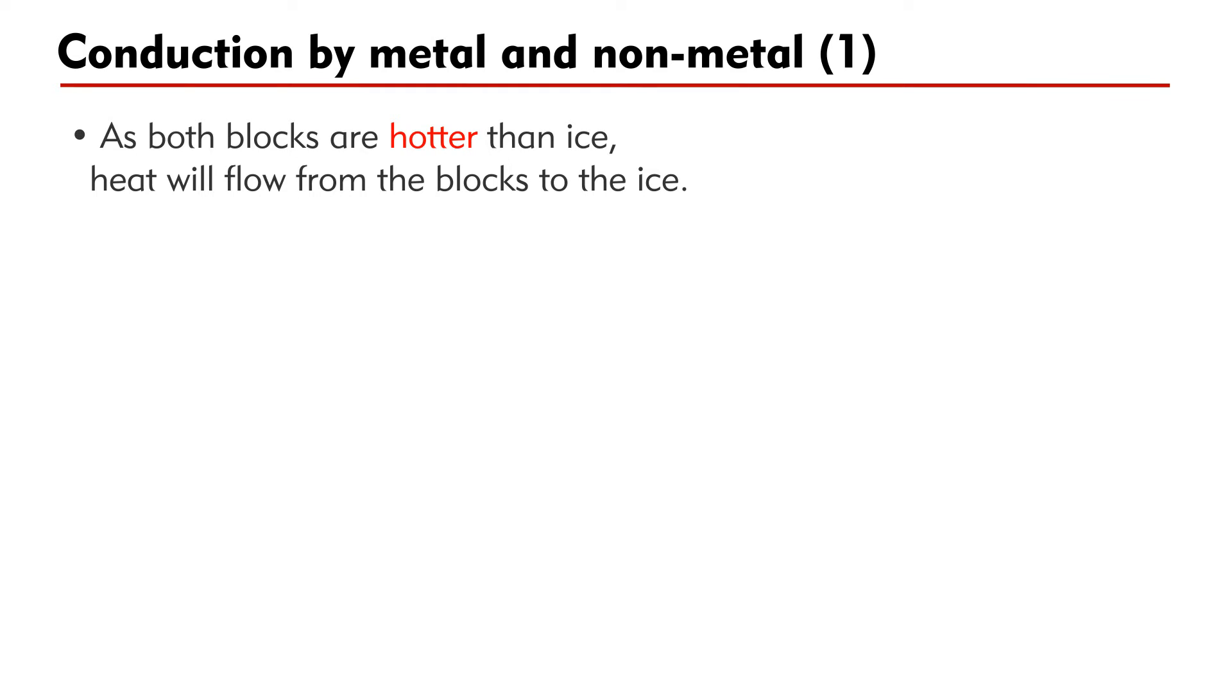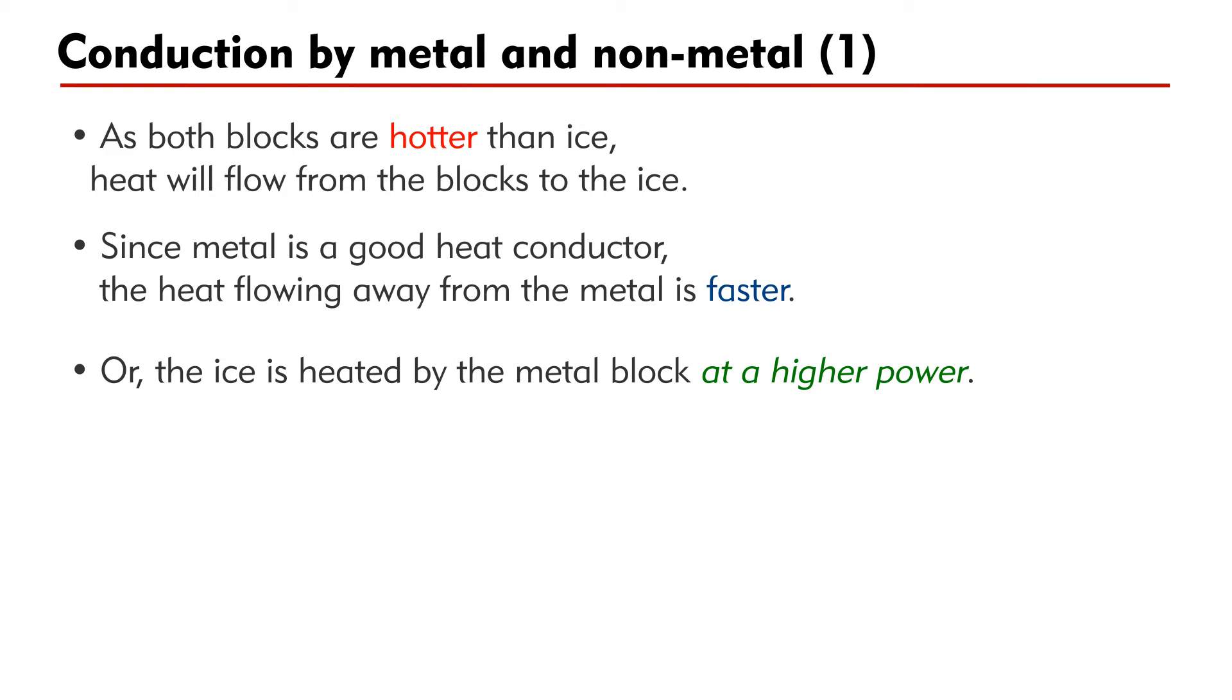As both blocks are hotter than the ice, heat will flow from the blocks to the ice. Since metal is a good heat conductor, the heat flowing away from the metal block is faster. In other words, the ice is heated by the metal block at a higher power than by the wooden block.